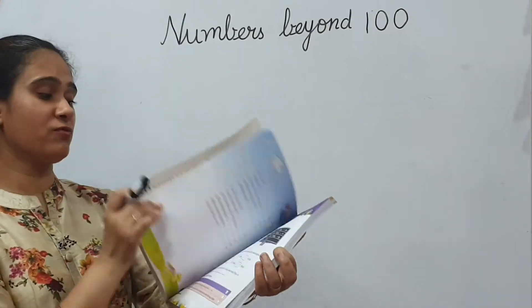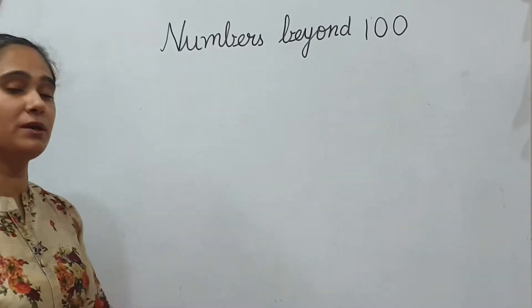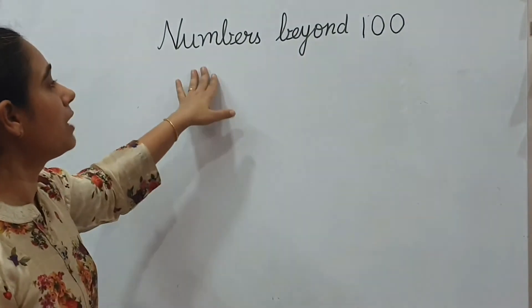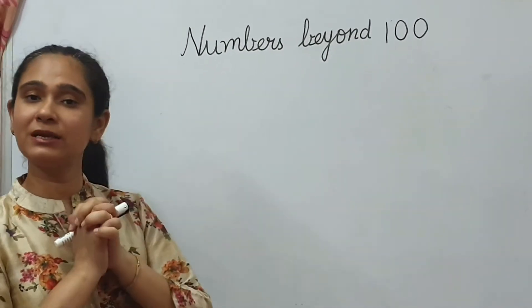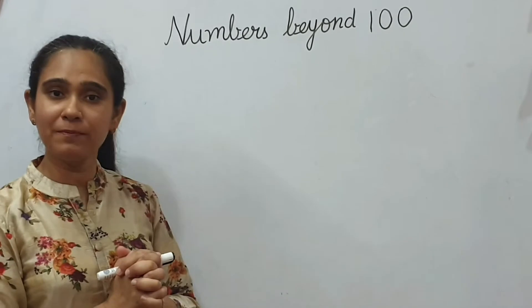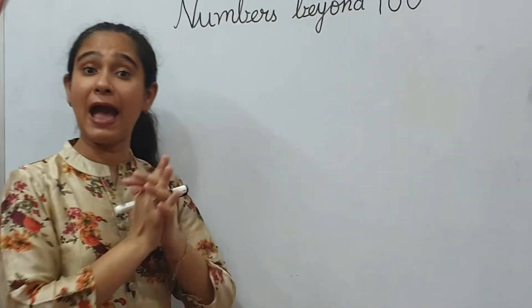We will do maths work today, and your first chapter is, sorry, the chapter number 5 is numbers beyond 100. We have learnt the difference between digit and number. Have you seen the video in which I told you about digit and number?